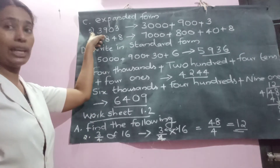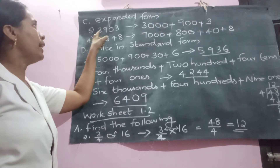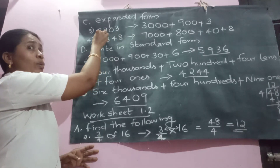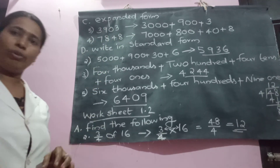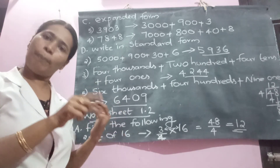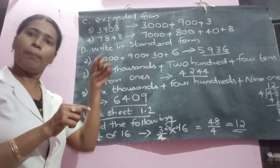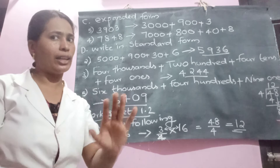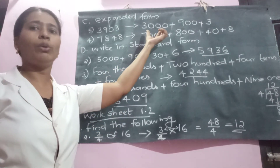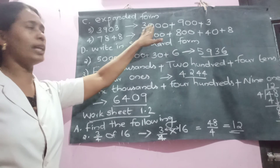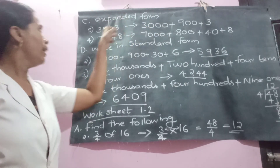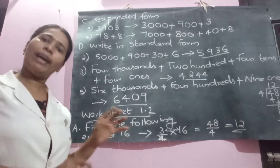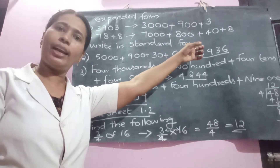Question number 5 on the worksheet: the number is 3, 9, 0, 3. Count the places — ones, tens, hundreds, thousands. So the expanded form is 3,000 + 900 + 0 tens + 3. We can avoid the zero for the tens place and just write 3. The answer is 3,000 + 900 + 3.